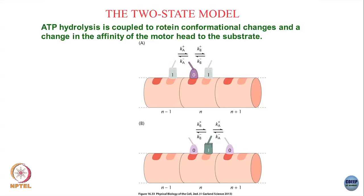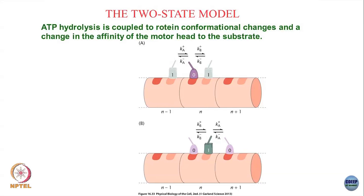It has two sorts of states — it could have multiple states — but at least in the simplest case, let us say that this motor has two possible conformational states: 0 and 1. On the same site it can exist in a 0 state or a 1 state. When it is in the 0 state it is inactive; it can become activated and stay on the same lattice site, switching to state 1 with rates kb+ and kb−.